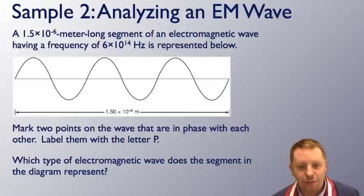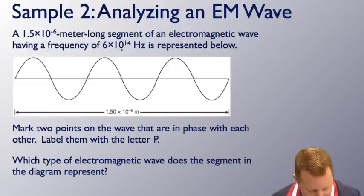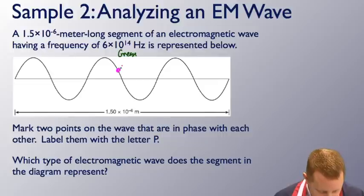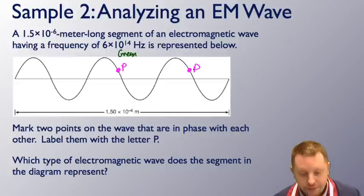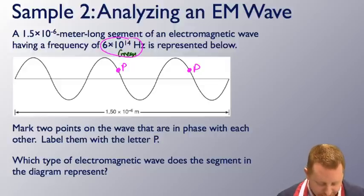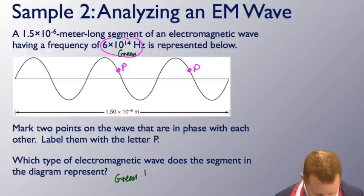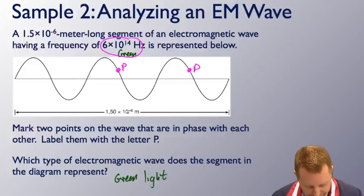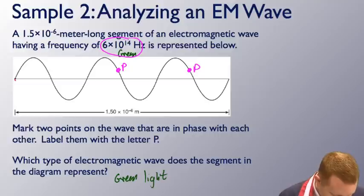The second problem: Analyzing an electromagnetic wave. A 1.5 times 10 to the minus 6 meter long segment of an electromagnetic wave with the frequency of 6 times 10 to the 14th hertz—that's that green light we just talked about—is represented below. Mark two points on the wave that are in phase with each other. Label them with the letter p. All right, that means we want the same point on consecutive waves. If that's one, then maybe over there, that'd be another. Two points, same phase. And what type of electromagnetic wave does the segment in the diagram represent? Well, that's the same frequency as our last problem. So again, that must be green light. And while we're here, can you tell what the wavelength is of this light by looking at the diagram? Well, if this whole thing is 1.5 times 10 to the minus 6 meters, let's see, we've got one wave from there to there, we've got another wave from here to here, and another wave from here to here.